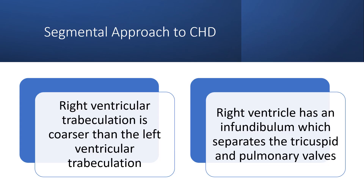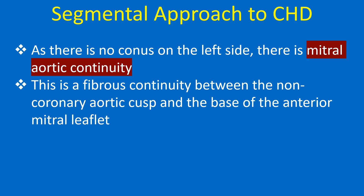Right ventricular trabeculation is coarser than the left ventricular trabeculation. The right ventricle has an infundibulum which separates the tricuspid and pulmonary valves. As there is no conus on the left side, there is mitral-aortic continuity — a fibrous continuity between the non-coronary aortic cusp and the base of the anterior mitral leaflet.